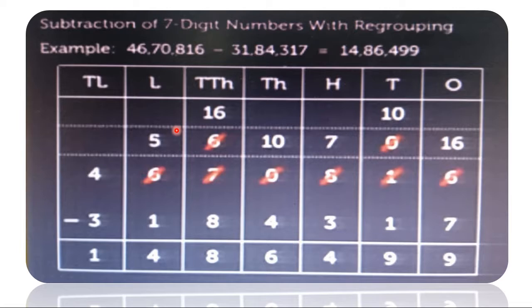Now at the ten-thousands place we have 5. So 5 minus 1, we got difference 4. And at the next place value we have 4. So 4 minus 3, we got difference 1. So the answer is 14,86,499.